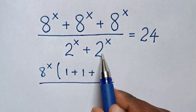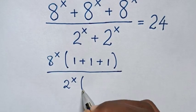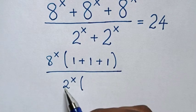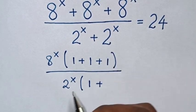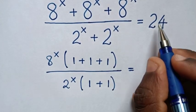In the denominator, 2 power x is common. So we take 2 power x out of bracket. 2 power x divided by 2 power x is 1 plus 2 power x divided by 2 power x is 1, bracket, is equal to 24.